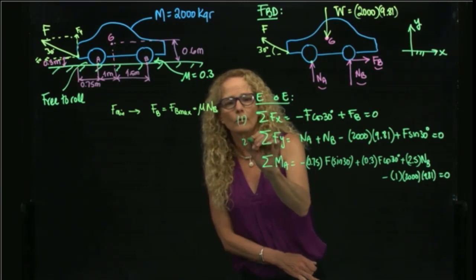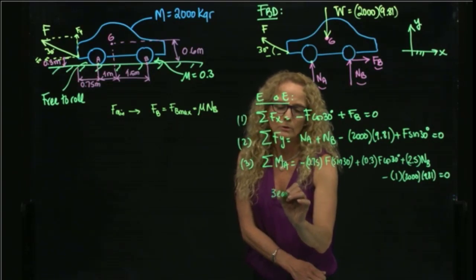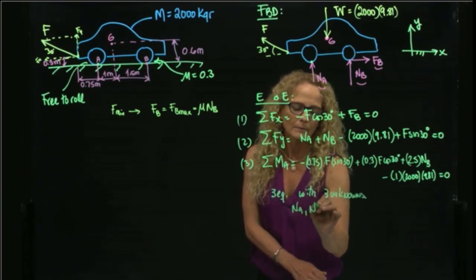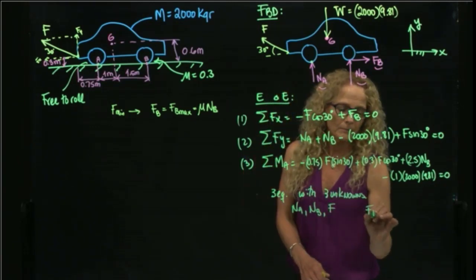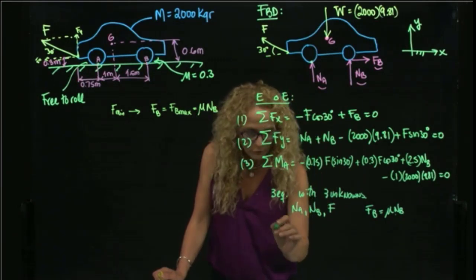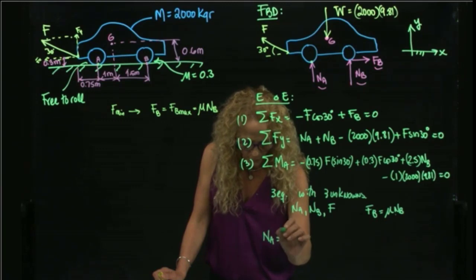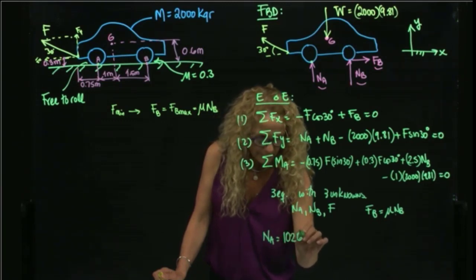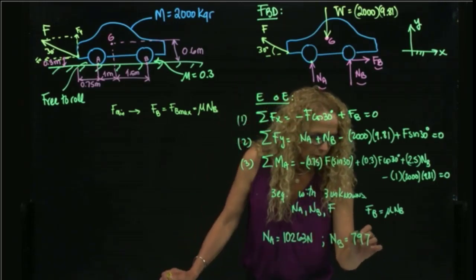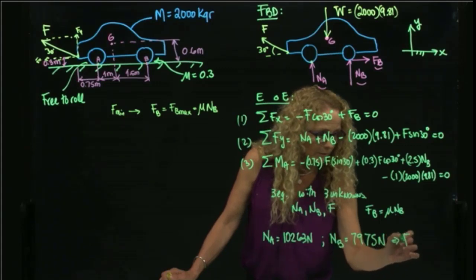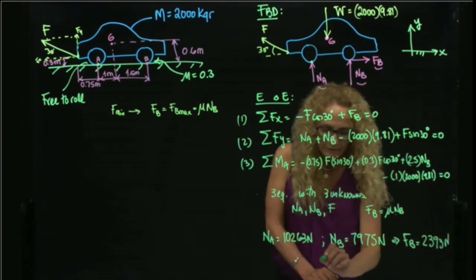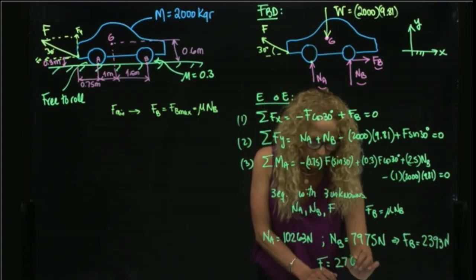Naming the equations 1, 2, and 3, we have three equations with three unknowns: NA, NB, and F. Remember that FB equals μ times NB, so it does not represent a new unknown. Solving the system, we get NA equals 10,263 N, NB equals 7,975 N. Therefore FB equals 0.3 times NB equals 2,393 N, and the required force F equals 2,762 N.